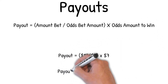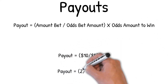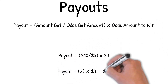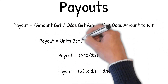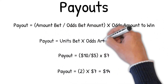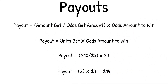In our example of betting the nine for ten dollars, we take the ten dollars — our amount bet — divided by the odds bet amount of five dollars to determine our units bet, which is two. We bet two units and then multiply that times the amount to win for the odds of seven dollars, giving us a total payout of fourteen dollars.